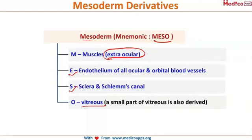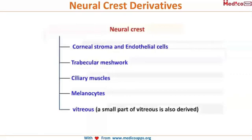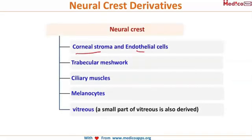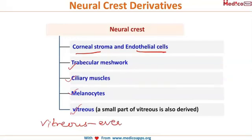Neural crest cells give rise to many remaining structures. The important ones to remember are: corneal stroma and endothelial cells, the trabecular meshwork, ciliary muscles, and melanocytes. Vitreous comes from everywhere, which helps reduce the workload. That is all about what you need to remember in the embryology of the eye.